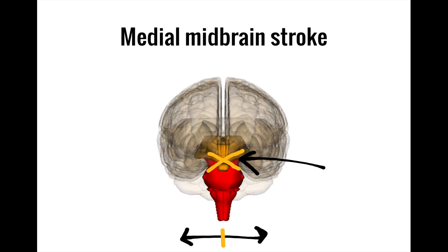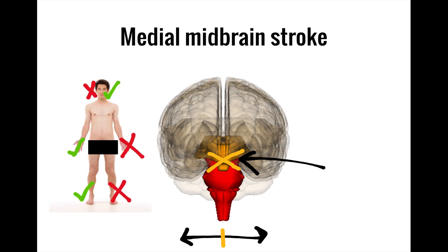Moving upward, we'll now talk about a medial midbrain stroke. Like all brainstem strokes we've discussed, midbrain strokes will produce crossed findings. However, because only two cranial nerves exit from the midbrain — the oculomotor and trochlear nerves — the crossed findings will tend to be more subtle, involving only eye movements rather than a more dramatic presentation like facial asymmetry.